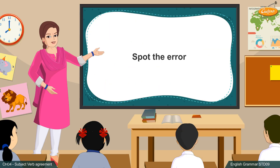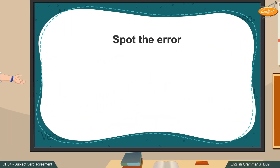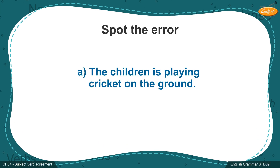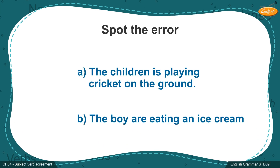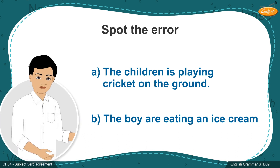Look at the given sentence and spot the error. A: The children is playing cricket on the ground. B: The boy are eating an ice cream.